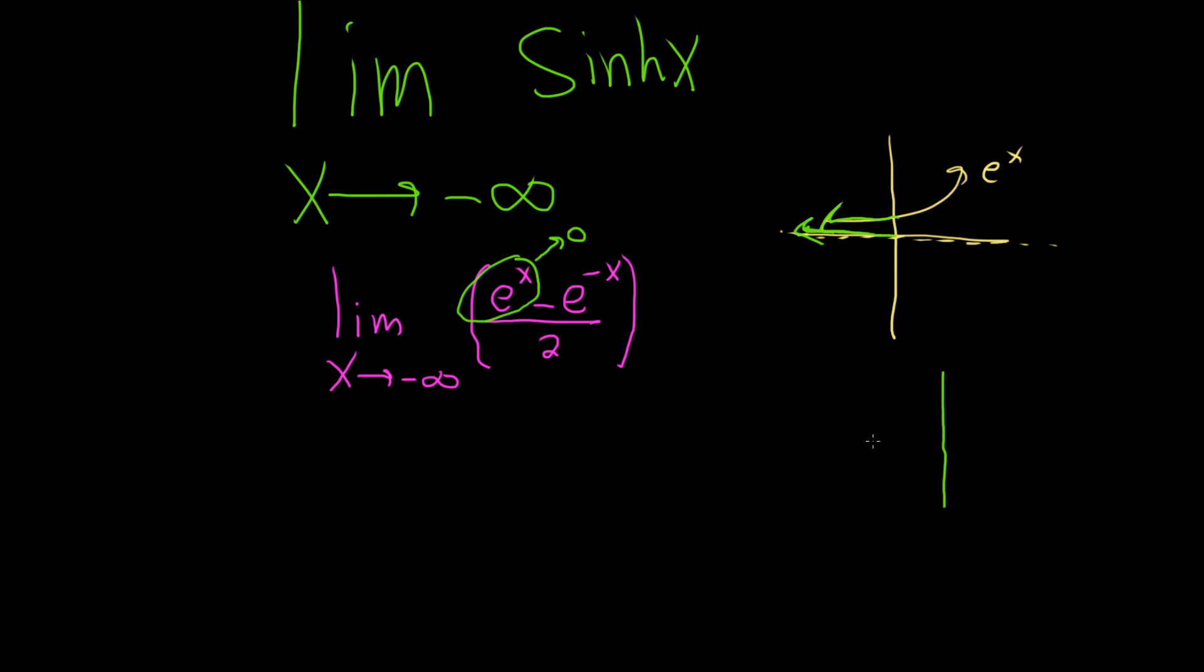If you think about the graph of e to the negative x, it looks like this. And so this is e to the negative x. And so as x approaches negative infinity again, the y value gets bigger forever. So this piece here actually approaches infinity.